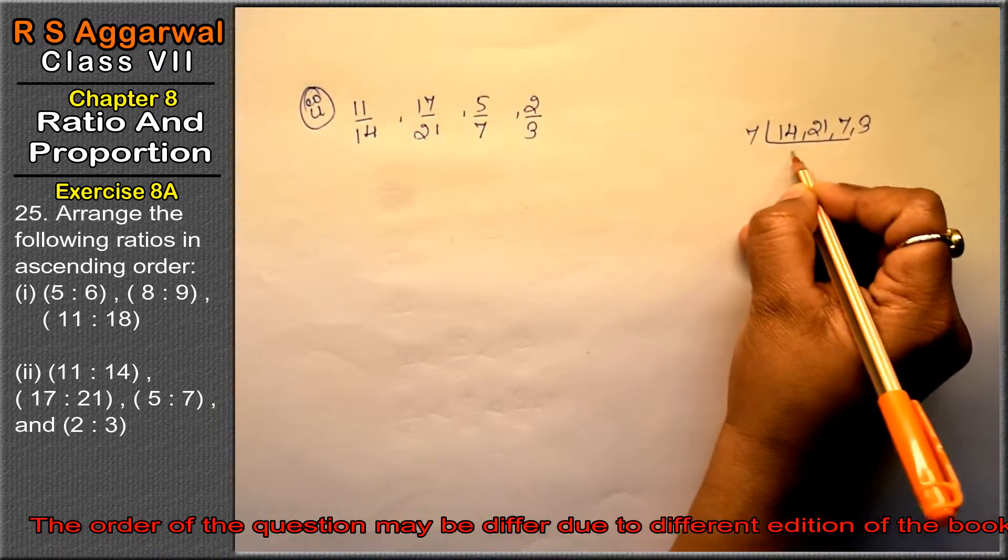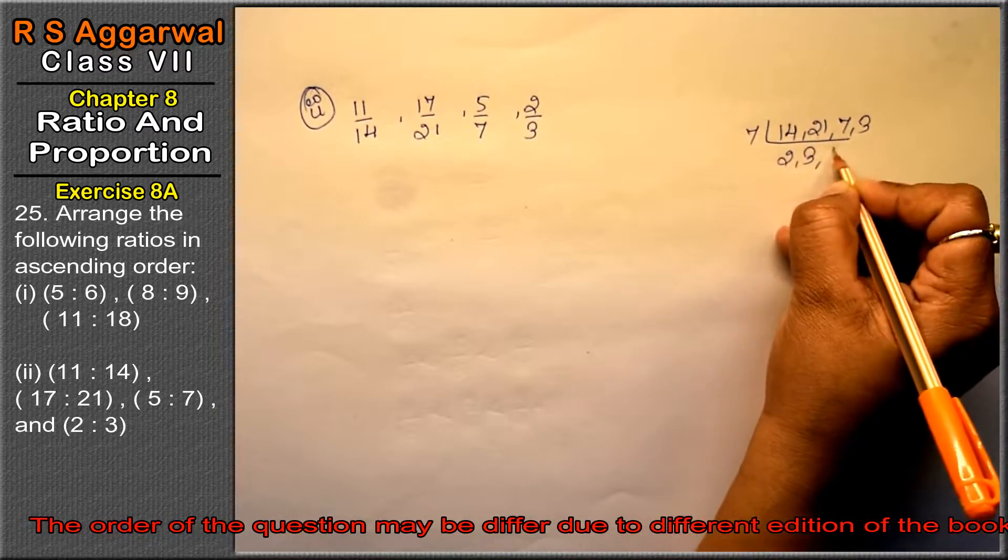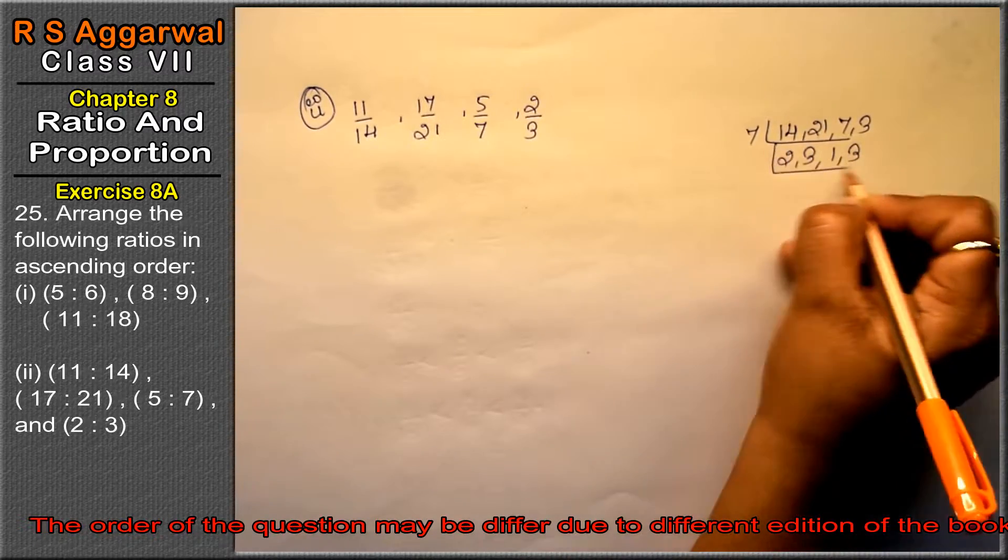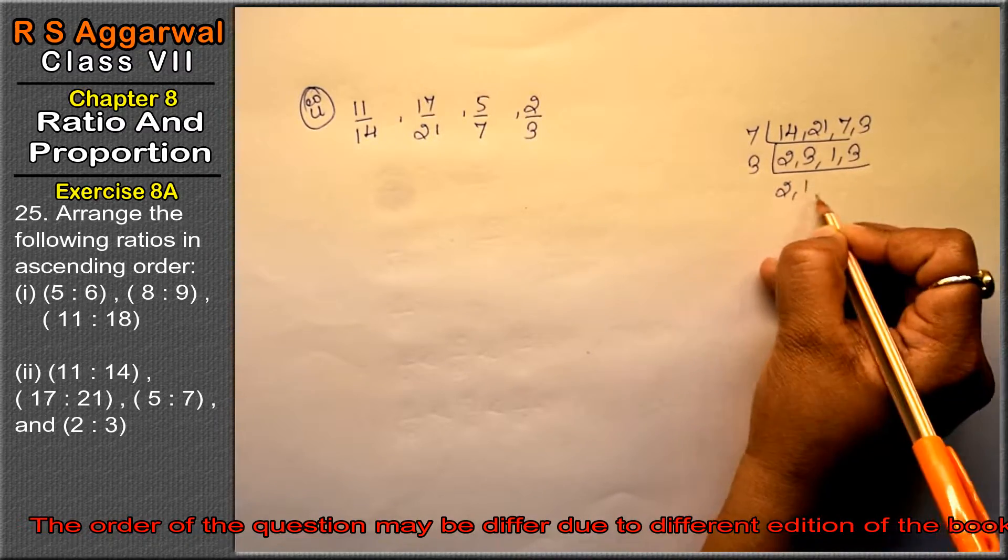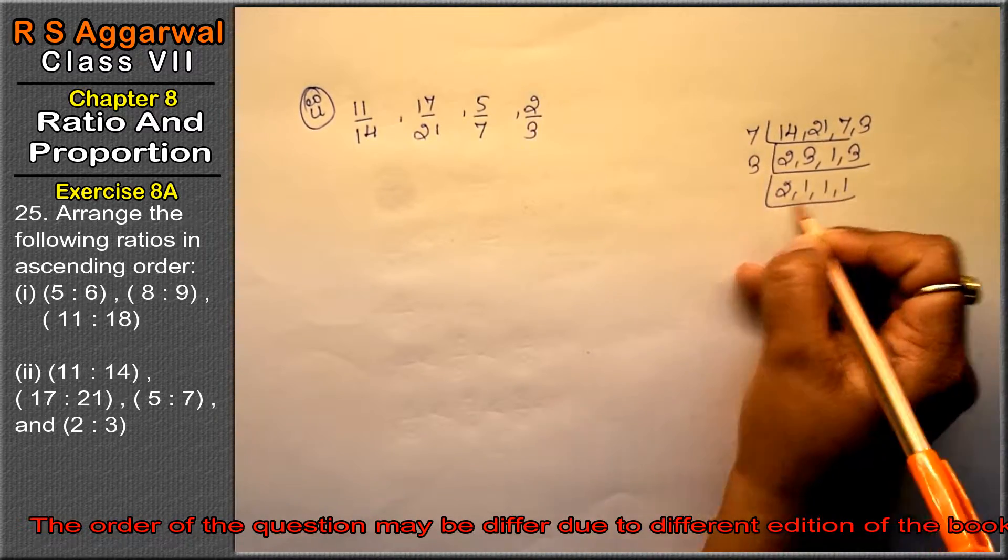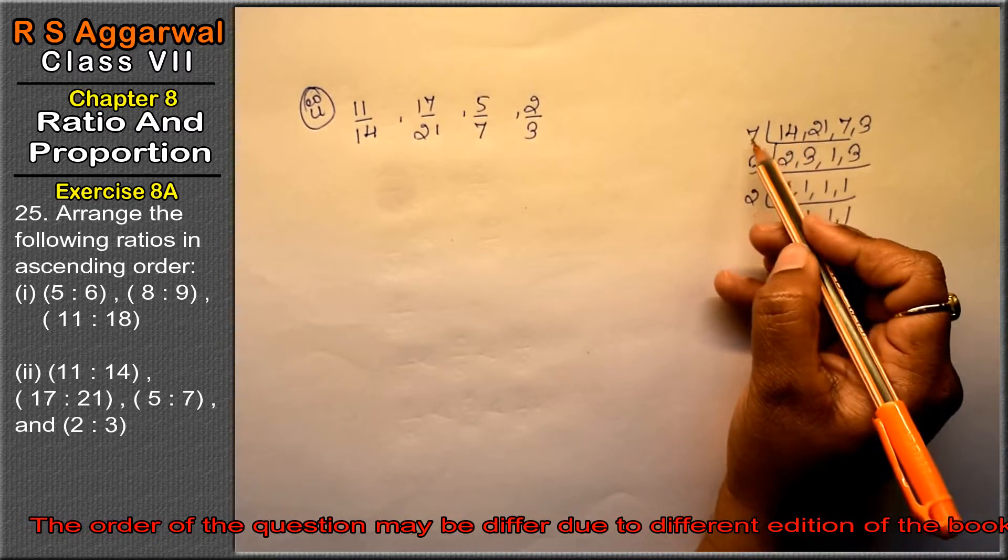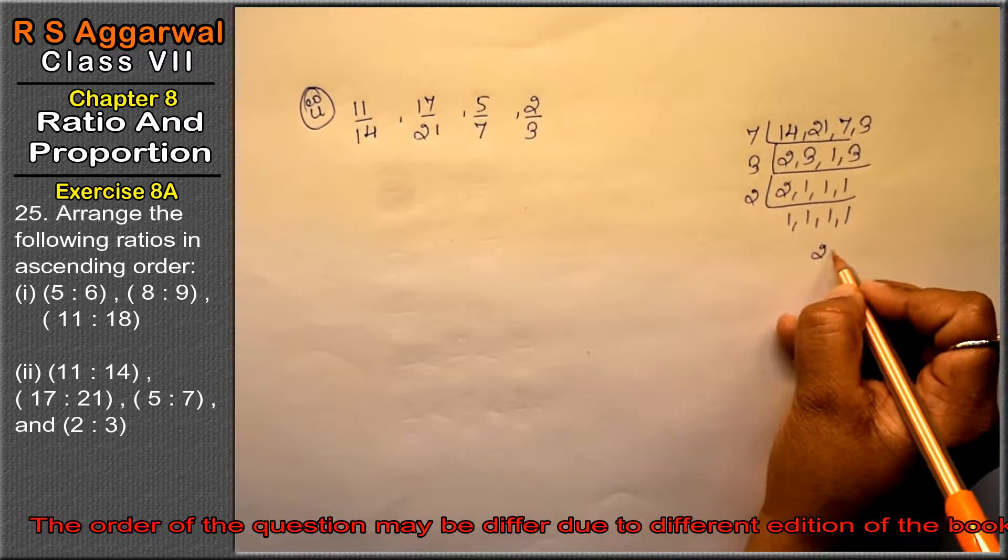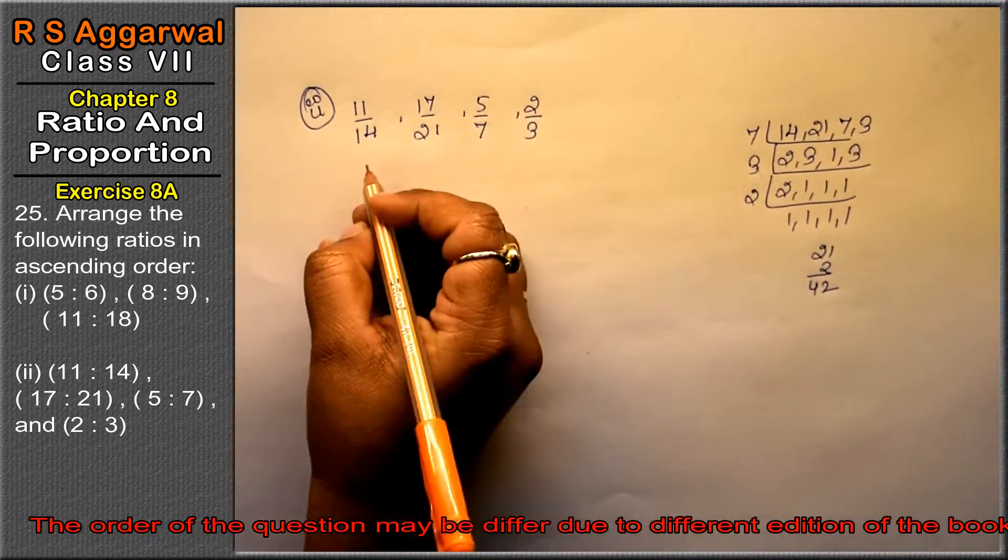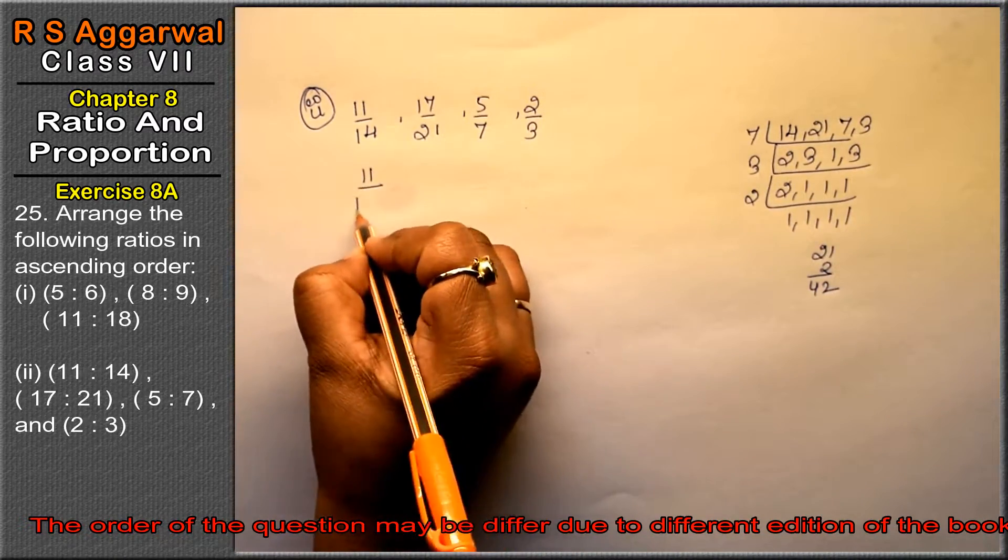7 into 2 is 14, 7 into 3 is 21, 7 into 1 is 7, and 3 as it is. Now factoring further: 3, 2, 1, 1, and 1. Then 2, 1, 1, and 1. So 7 into 3 is 21, into 2 is 42. So we all make denominator 42.